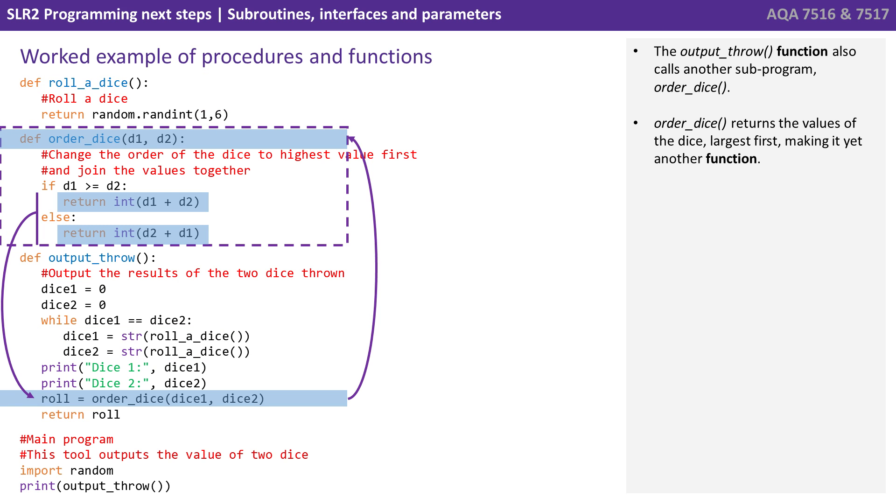The output throw function also calls yet another subprogram, order dice. As we can see, order dice returns the values of the dice with the largest first, making it yet another function.